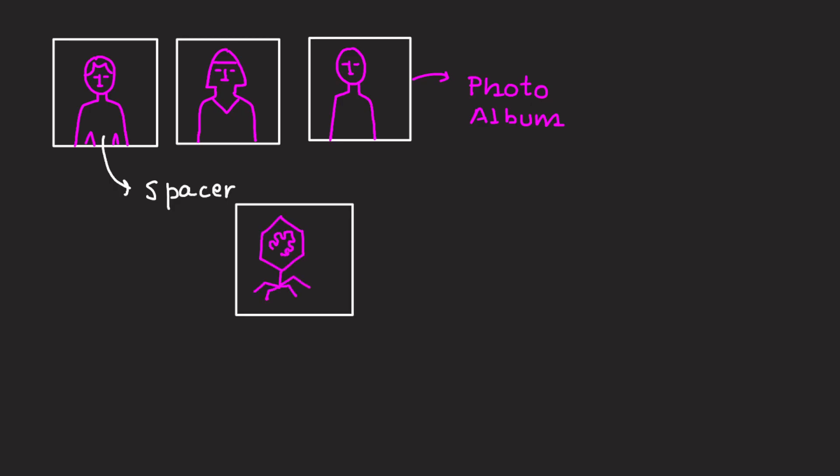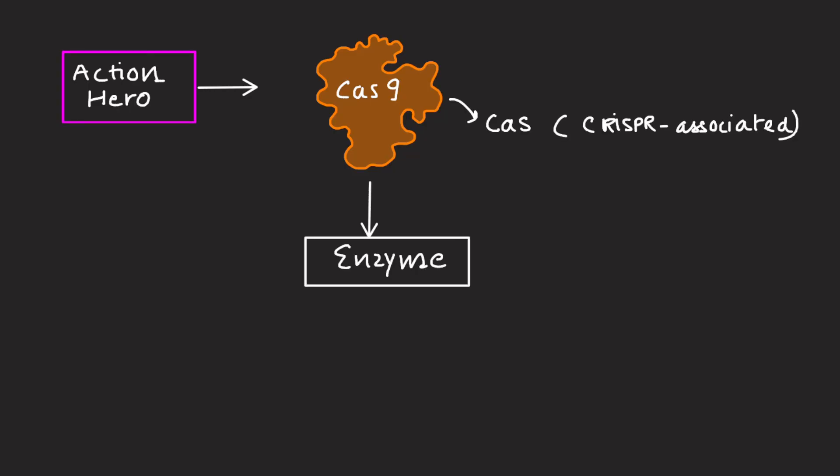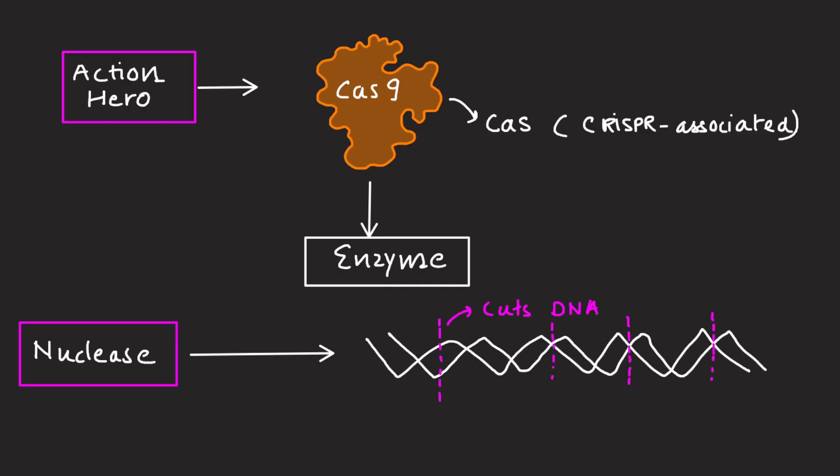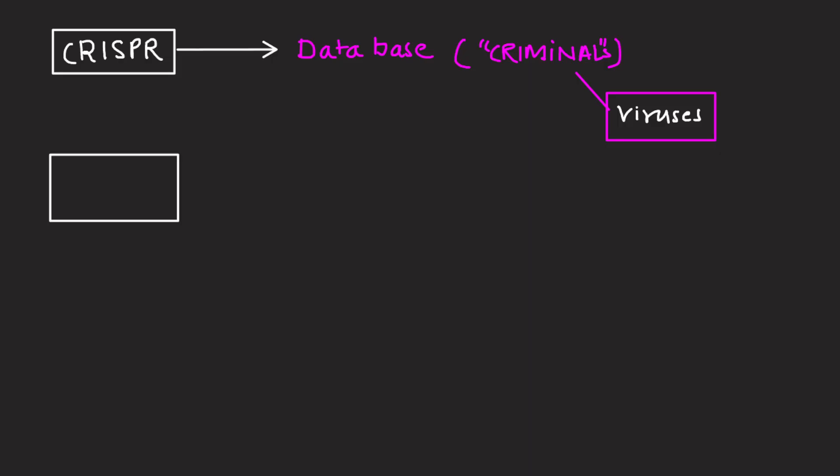Now comes the action hero of this system, which is Cas9. Cas stands for CRISPR associated. Cas9 is an enzyme, specifically a nuclease, which means it can cut DNA molecules. If CRISPR is the database of past criminals, which is let's say viruses, then Cas9 is the security guard with scissors trained to attack any matching intruder.